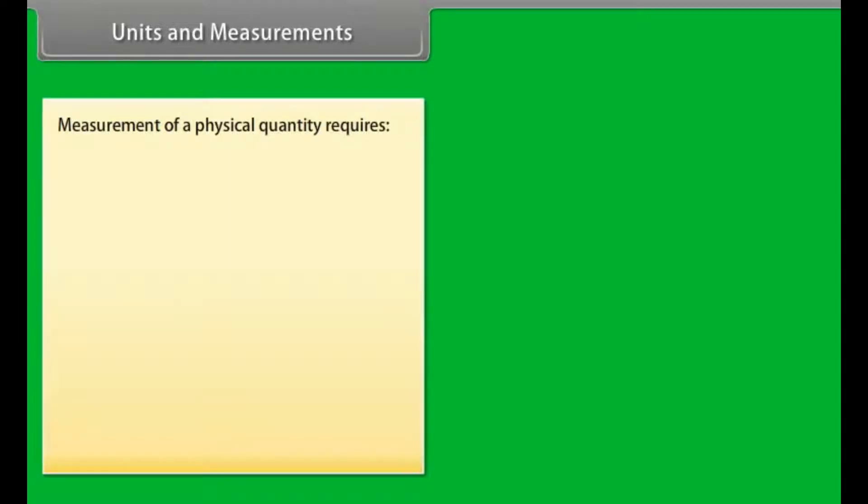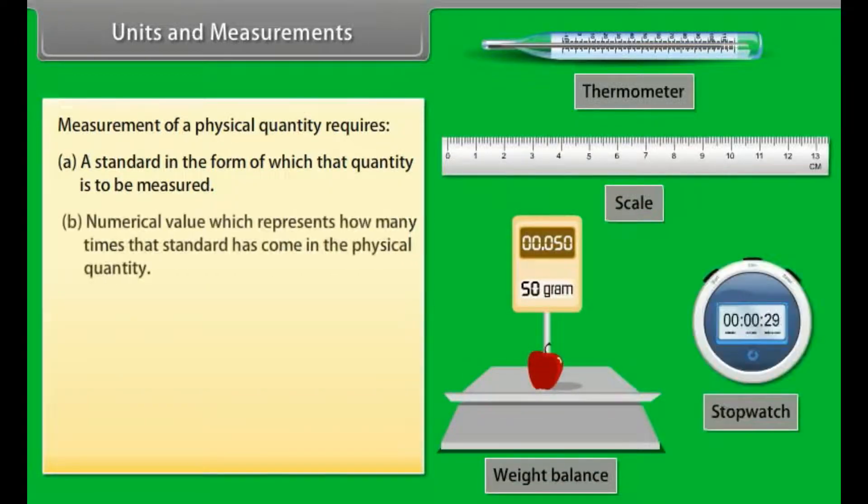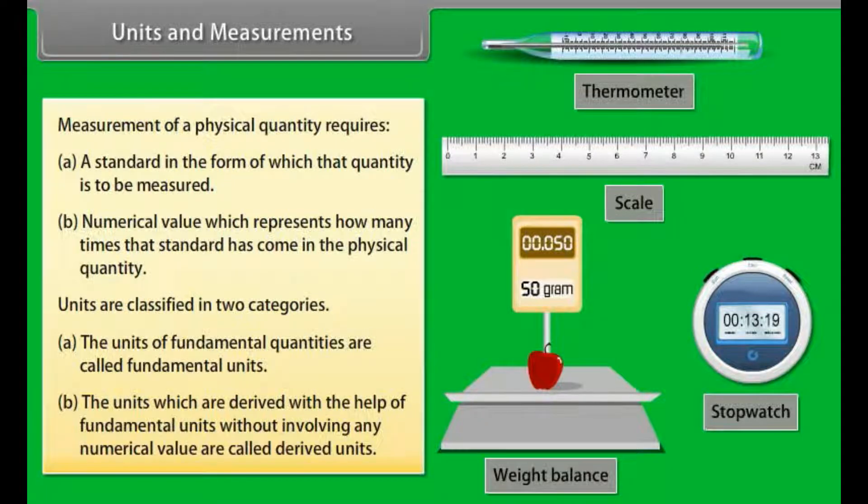Units and measurements. Measurement plays a very vital role in the study of physics. Measurement of a physical quantity requires: A) a standard in the form of which the quantity is to be measured, and B) numerical value which represents how many times that standard has come in the physical quantity. Units are classified in two categories: A) fundamental units, the units of fundamental quantities, and B) derived units, units which are derived with the help of fundamental units without involving any numerical value.